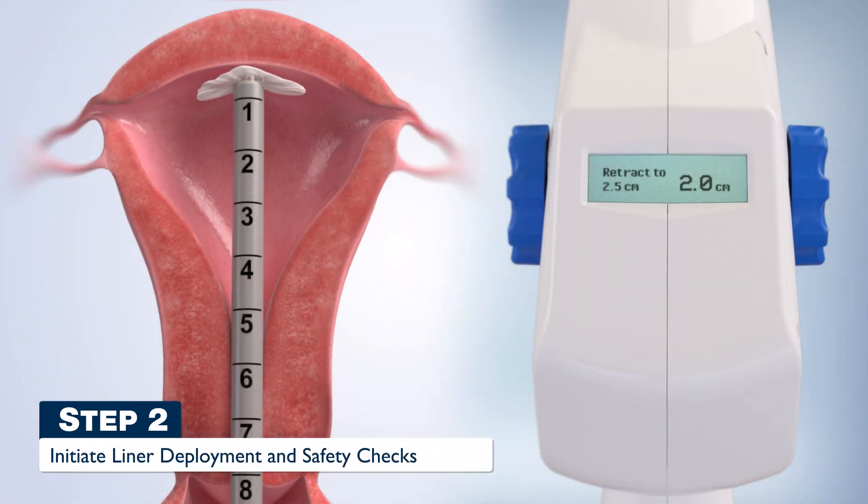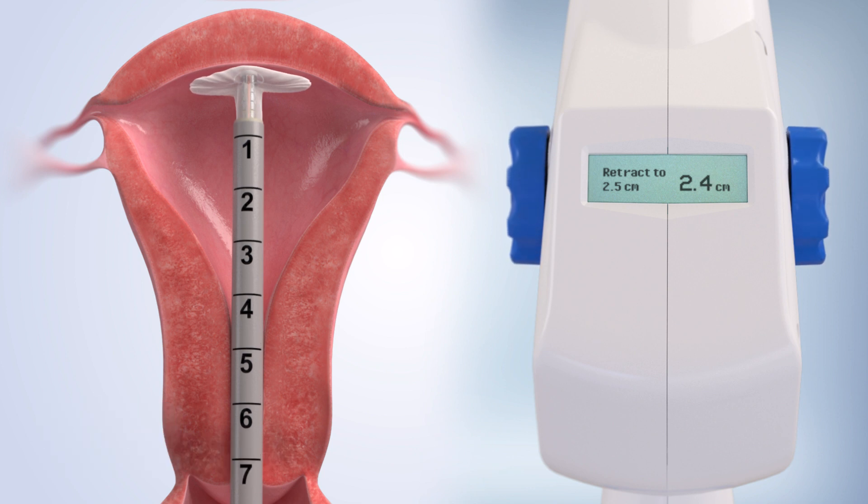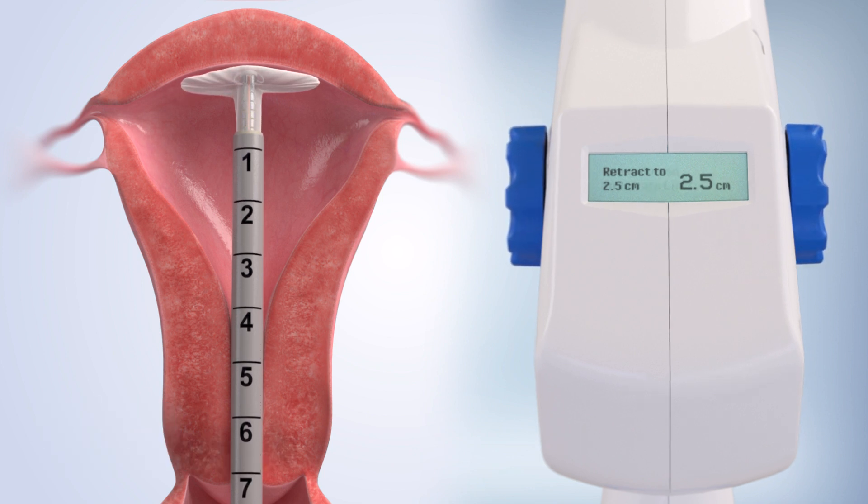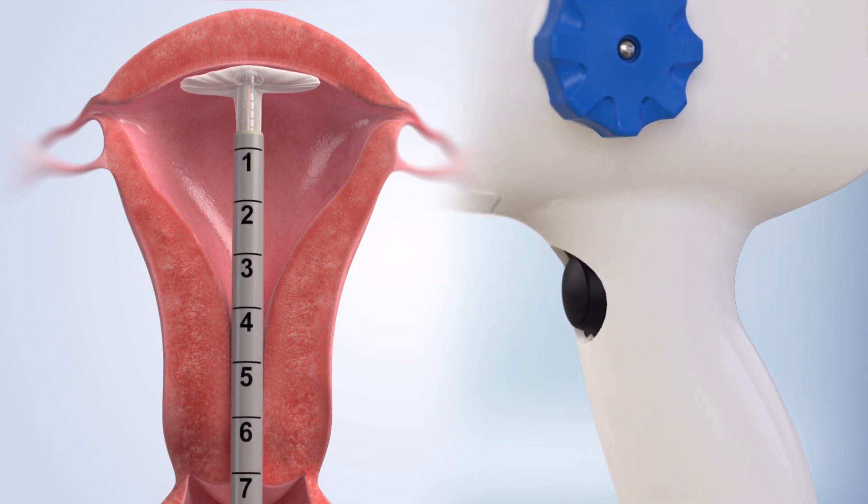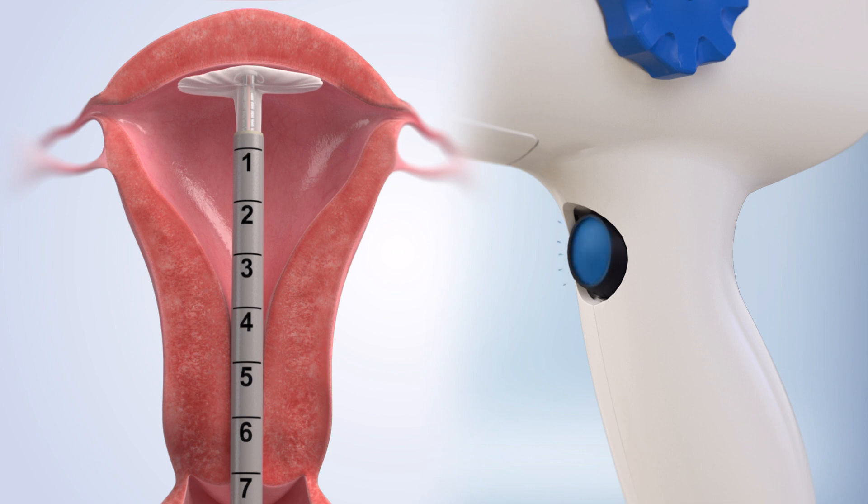Step 2. Turn the sheath retraction knob until the LCD screen displays 2.5 cm. Press and release the button to gently deploy the cavity conforming liner and begin safety checks.